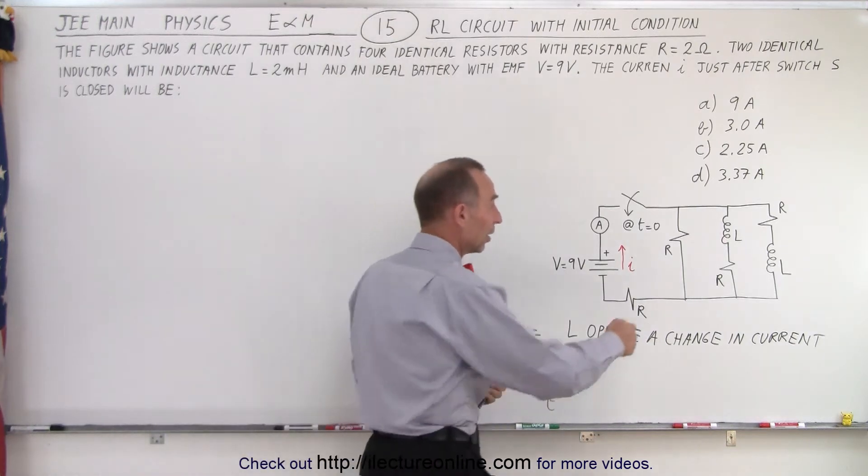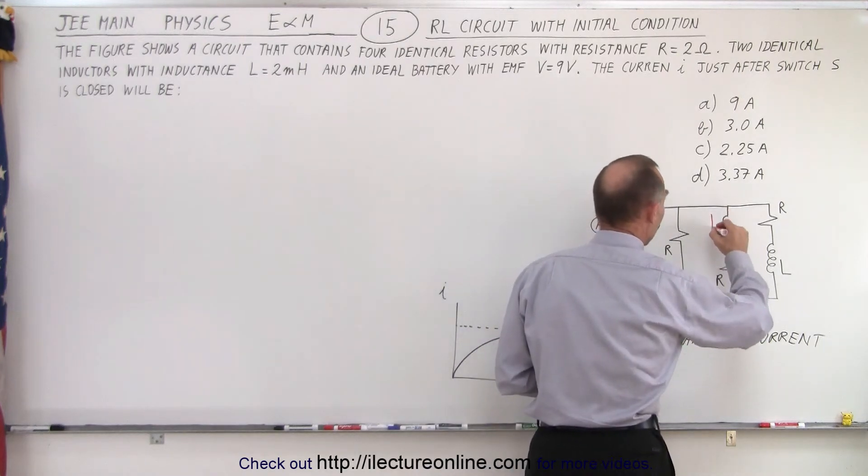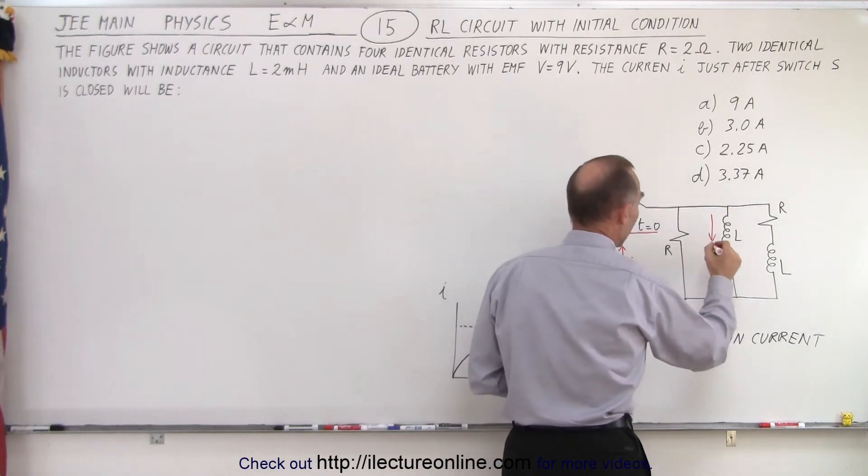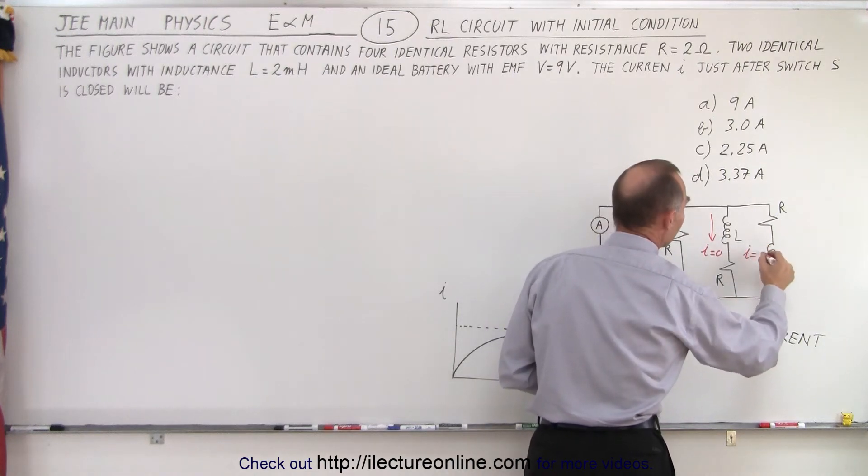Which means that the current through this inductor is going to be equal to zero. See here. So here, at T equals zero, I through this branch here will be zero, and I will be zero here.